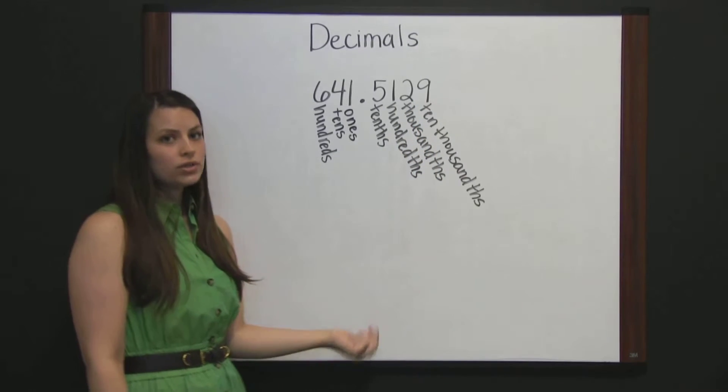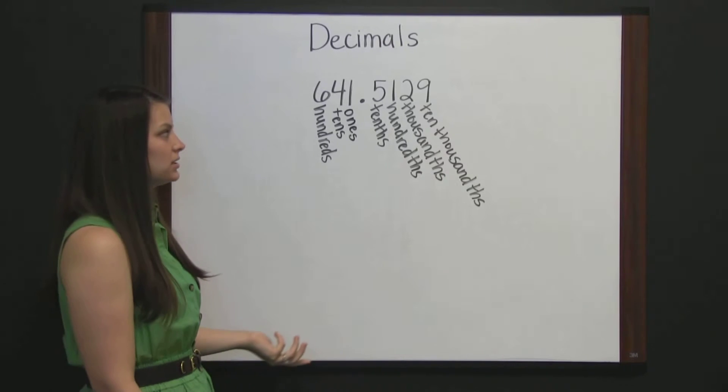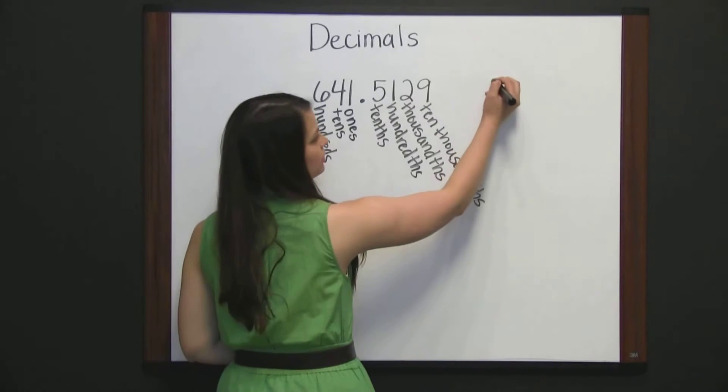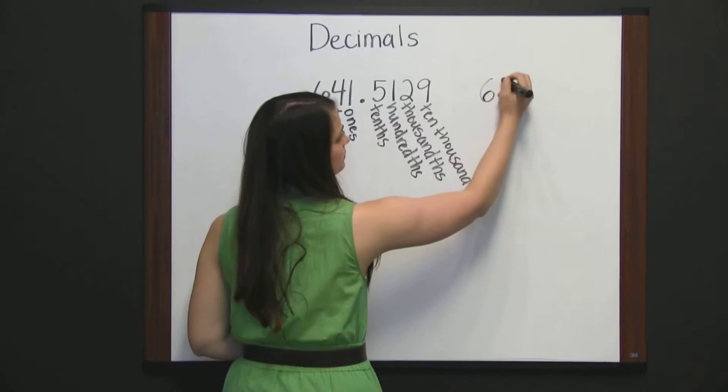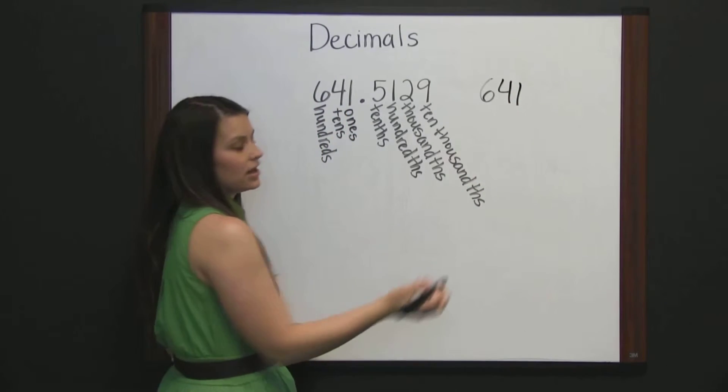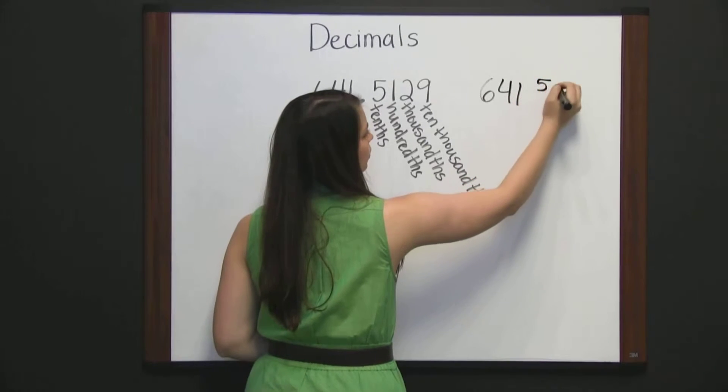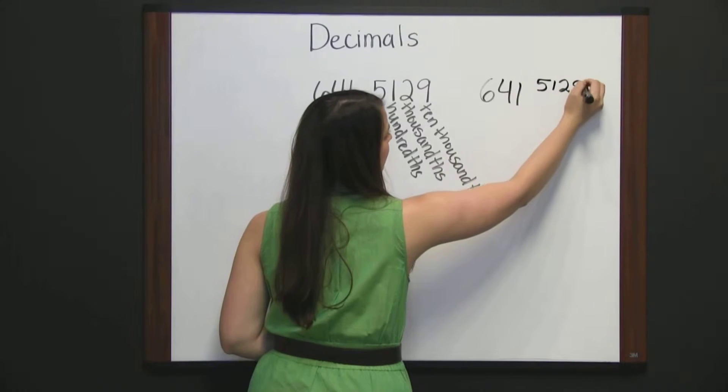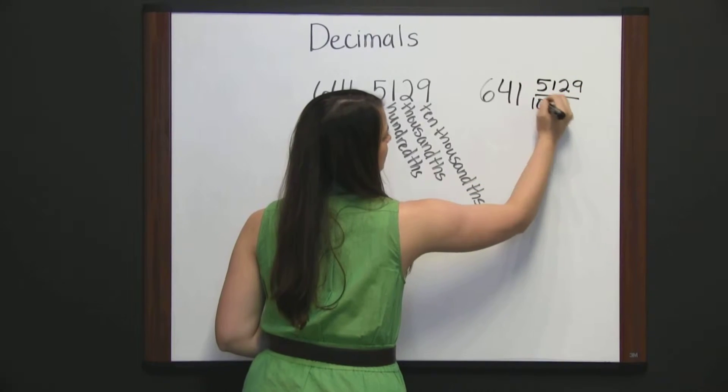This number could also be represented as a mixed number: 641 and 5129 ten thousandths.